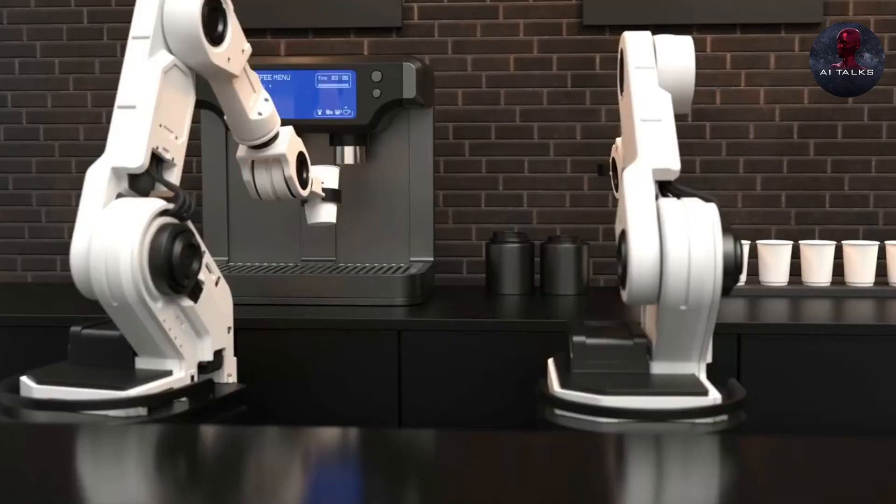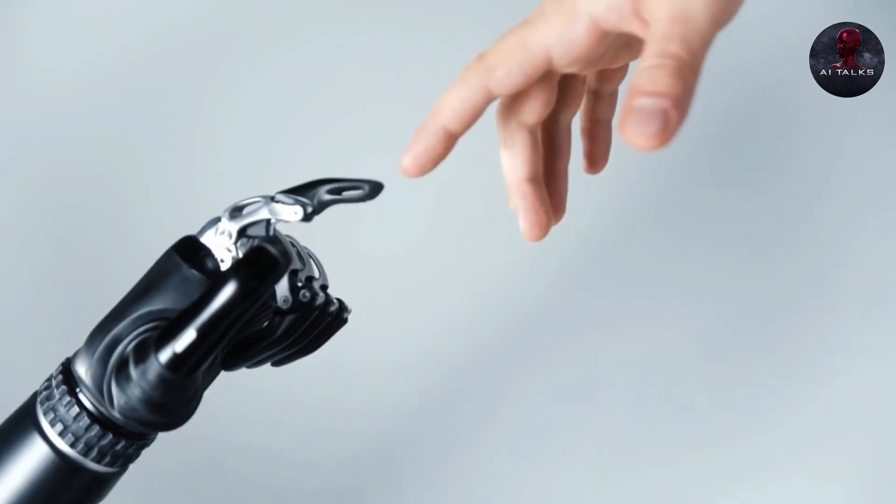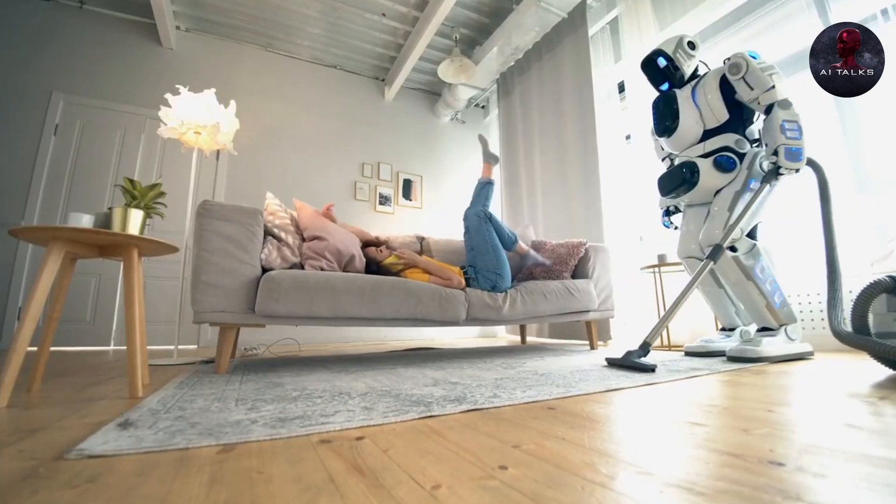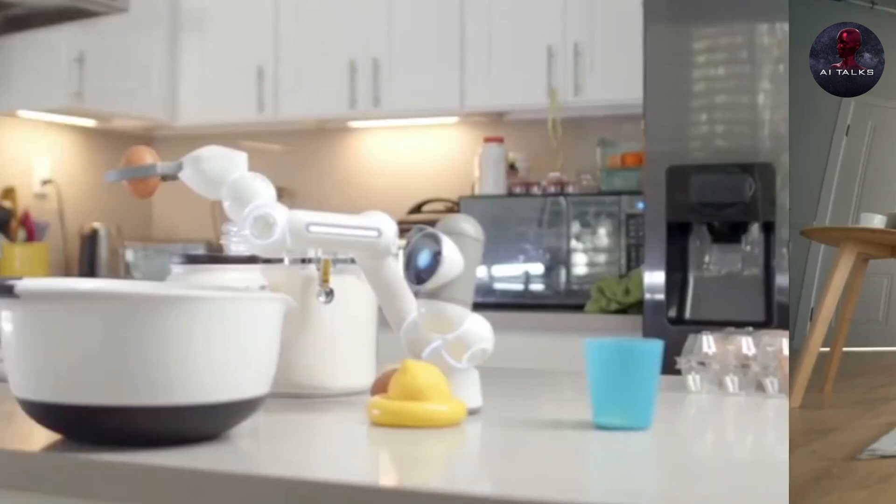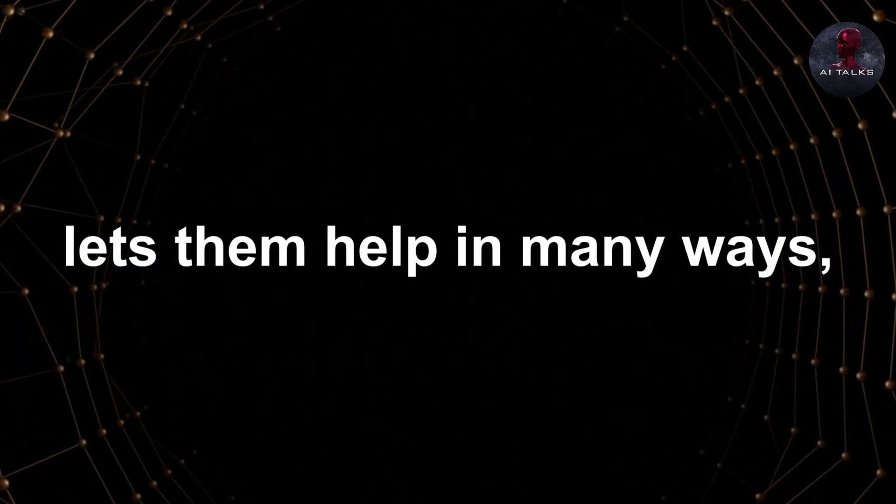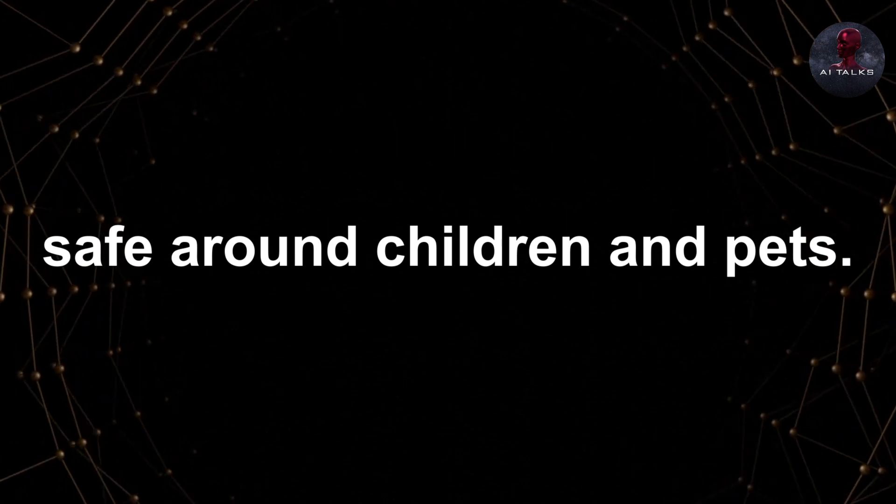With smarter, more flexible robots, how could our lives change? In our homes, adaptable robots could assist with household chores: cooking, cleaning, even babysitting. Their broad skill set lets them help in many ways, safe around children and pets.